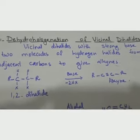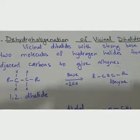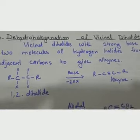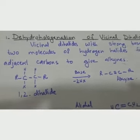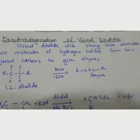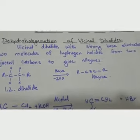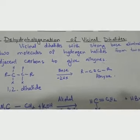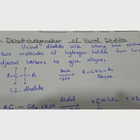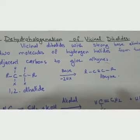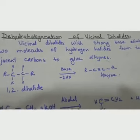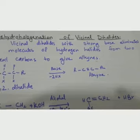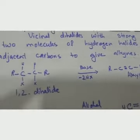Vicinal dihalides are halogenated hydrocarbons where halogen atoms are present on adjacent carbons. When we react a vicinal dihalide with a strong base — sodium hydroxide or potassium hydroxide in the presence of alcohol — a carbon-carbon triple bond forms and hydrogen halide molecules are removed. This is the general reaction.